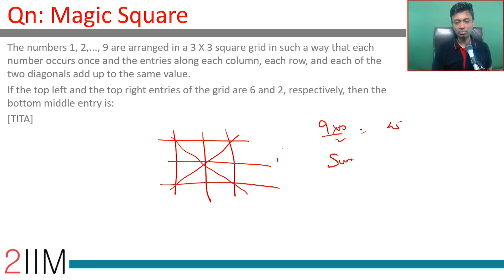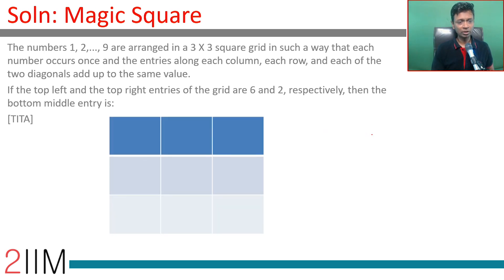Let's put the numbers in. We know that the top left and top right entries of the grid are 6 and 2. Top left is 6, top right is 2. 6 plus 2 is 8, so this should be 7. These three add up to 15.